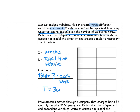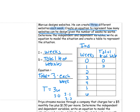Now we can make a table. The independent is always the first column, so the first column is weeks, and we choose some numbers. The second column is total number of websites. If he had zero weeks — didn't work at all — three times zero is zero. If he worked one week, three times one is three. If he worked three weeks, three times three is nine. If he worked four weeks, three times four is twelve. Every time we add a new week, we add another three websites.